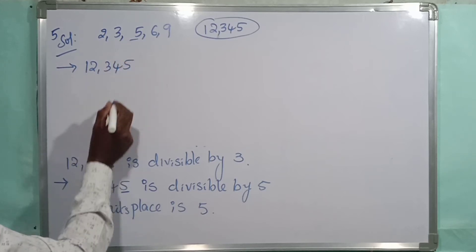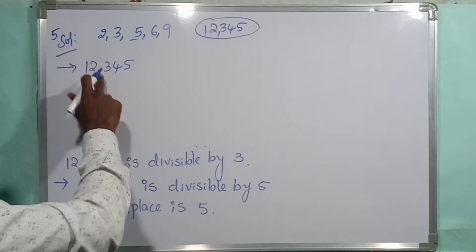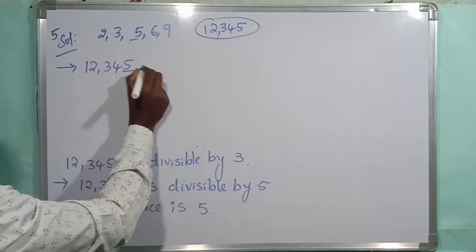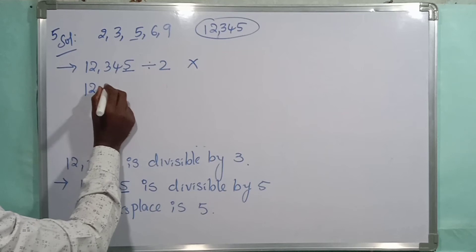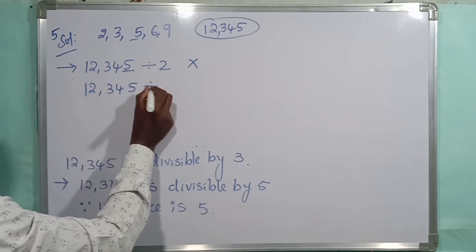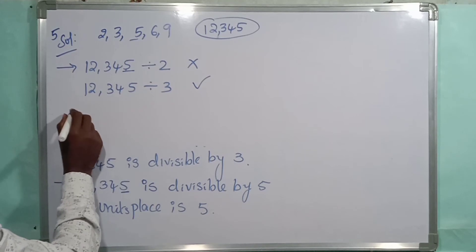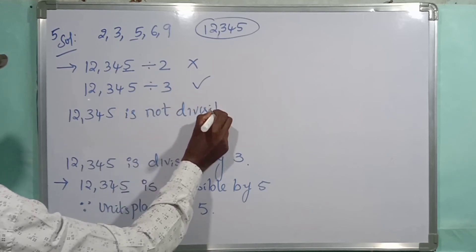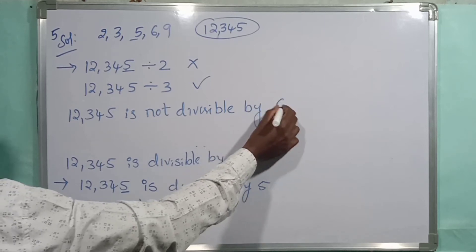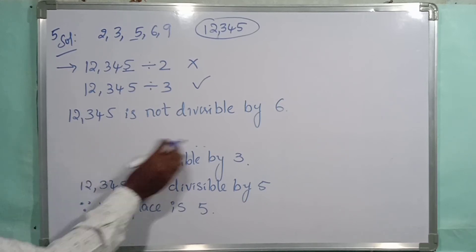Now for 6: the divisibility rule for 6 is that the number should be divisible by both 2 and 3. Checking for 2 — is 12345 divisible by 2? No, because the units place is an odd number. Is it divisible by 3? Yes. But since both conditions are not true, 12345 is not divisible by 6. The number must be divisible by both 2 and 3 to be divisible by 6.